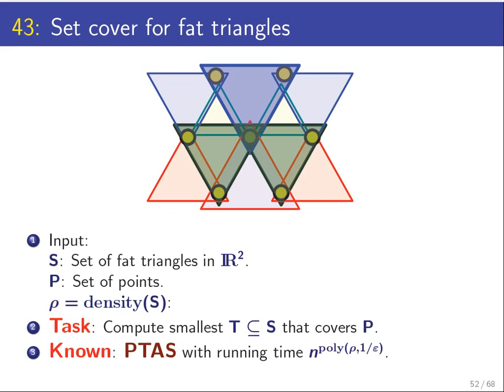If the input set of triangles has density ρ, then one can find an algorithm that has running time n to the power of some polynomial in ρ and ε. This is essentially the local search algorithm we just discussed. It turns out that this is just a dominating set problem, and as such the local search PTAS algorithm just works.